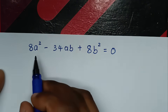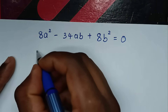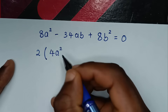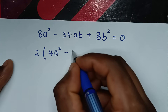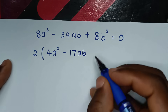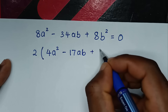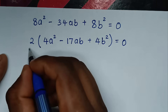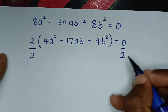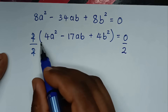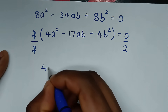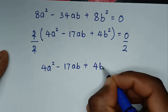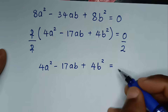From this equation, 2 is common, so we factor out 2: 2(4a² - 17ab + 4b²) = 0. Dividing both sides by 2 gives: 4a² - 17ab + 4b² = 0.